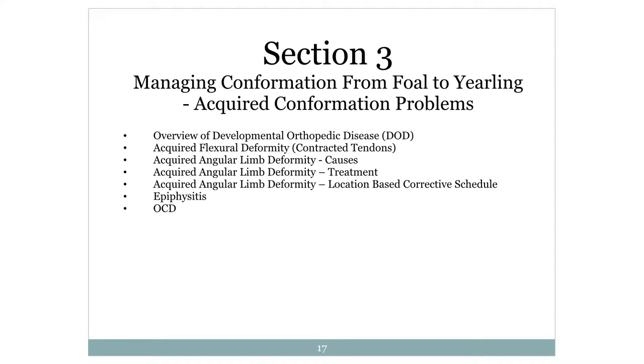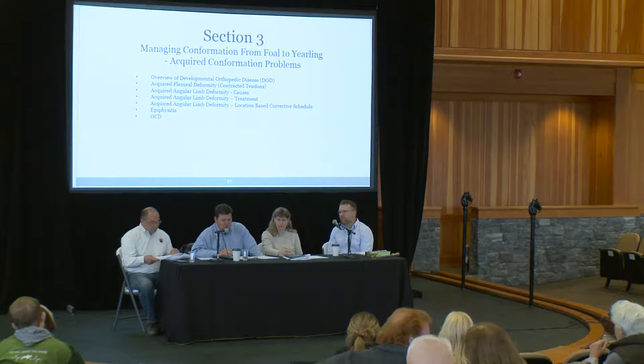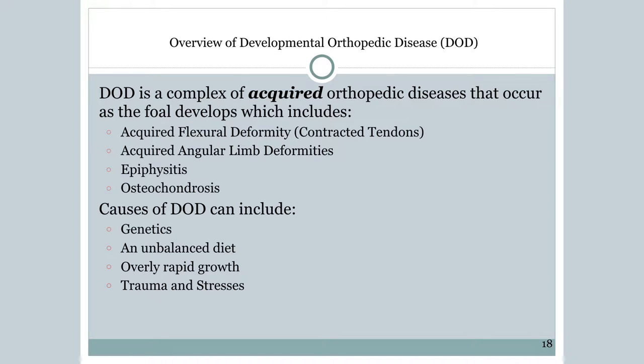Joan has tasked me with foal-to-yearling acquired conformation problems. We're going to look at developmental orthopedic diseases including physitis and OCDs, acquired flexural deformities — which is different from congenital, the things horses are born with that were just covered by Lois — versus things that happen developmentally. We're also going to talk about angular limb deformity: causes, treatment, and location-based corrective schedule.